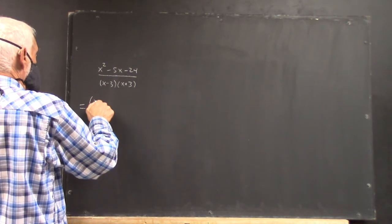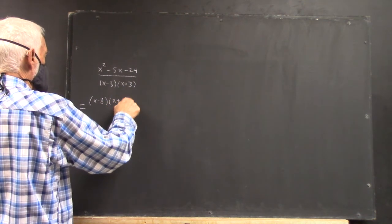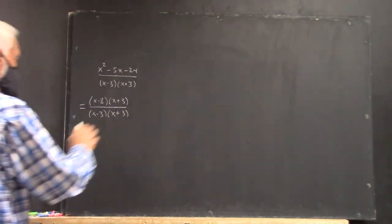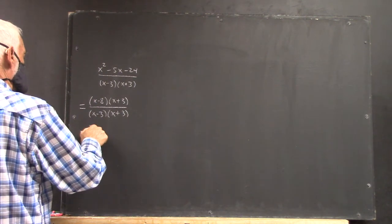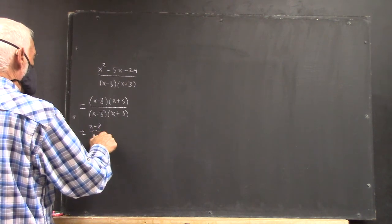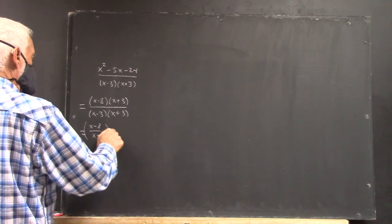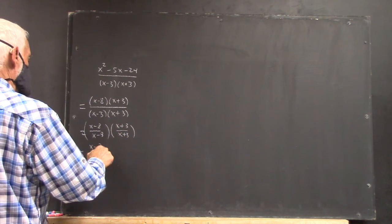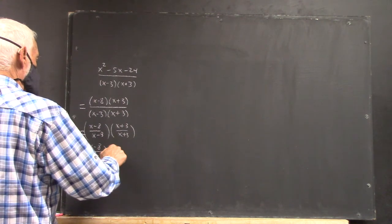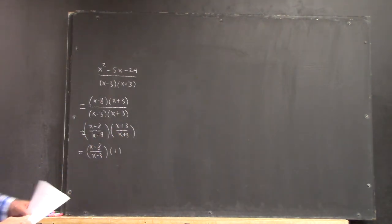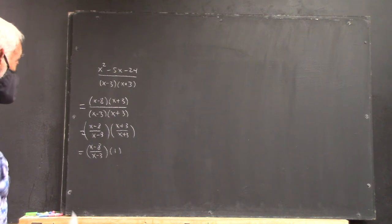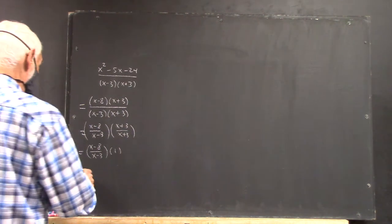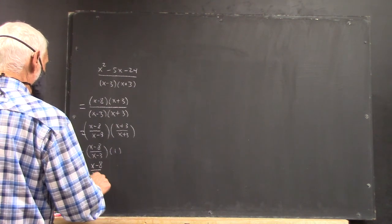Well, this factors into x minus 8 times x plus 3. And the denominator remains the same. Well, this is x minus 8 over x minus 3 times x plus 3 over x plus 3. And that's x minus 8 over x minus 3 times 1. Why is this 1? It's 1 because you're dividing something by itself. You're dividing the expression by itself. An expression goes one time into itself. Because 1 times the expression is itself.